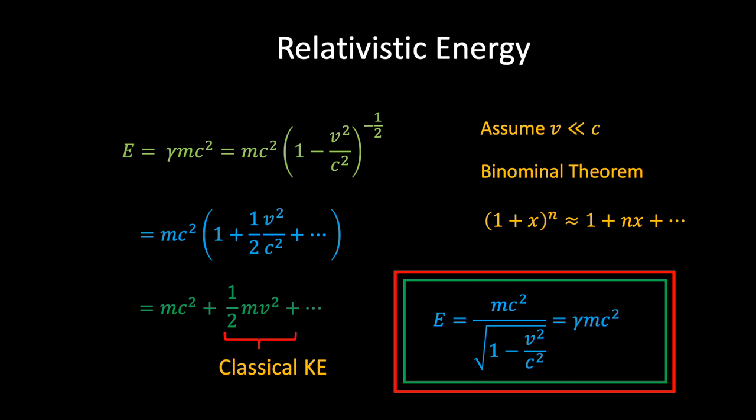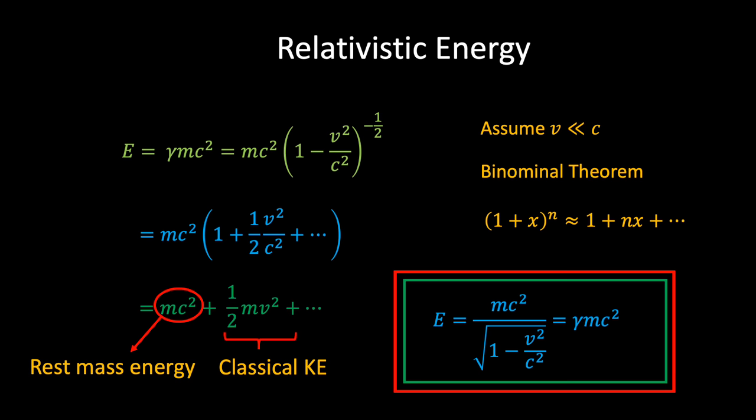Notice that the mc² term appears whether the object is moving or not. Setting v=0 gives a total energy of mc² — since this energy exists even when the object is at rest, it is referred to as the rest mass energy. Even before relativity, it was understood that an object's energy is more than just kinetic energy. You can think of the rest energy as the energy required to create the mass of the object; the more massive an object, the more energy is required. Once created, the rest energy is a form of stored energy — energy stored in the form of mass.